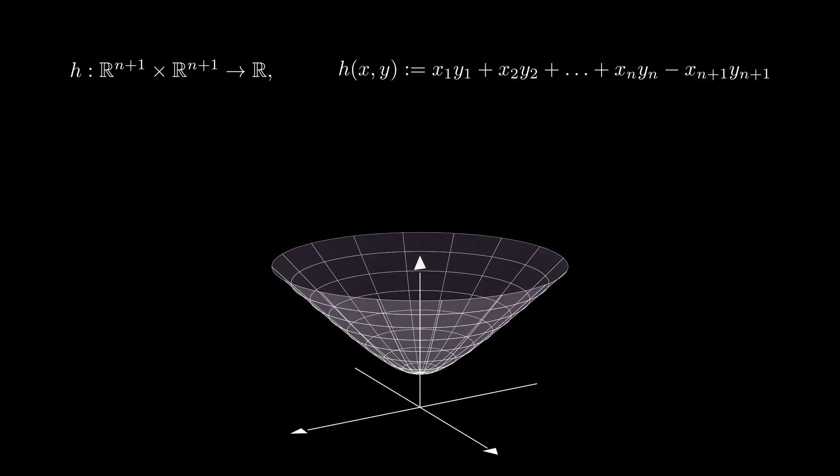The hyperboloid model of the hyperbolic space is going to be the vectors p with positive last coordinate and that h(p,p) equals minus 1. We call that set M. If n equals 2, this is just one sheet of the hyperboloid x squared plus y squared minus z squared equals minus 1.